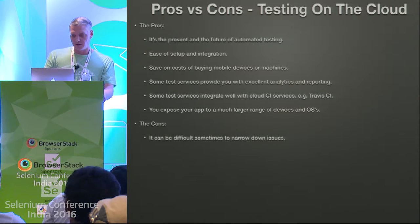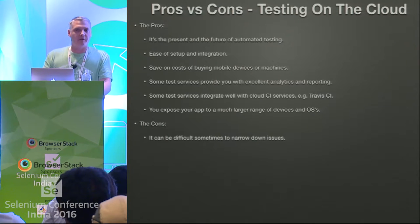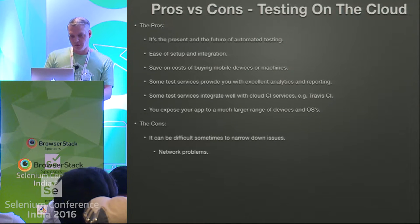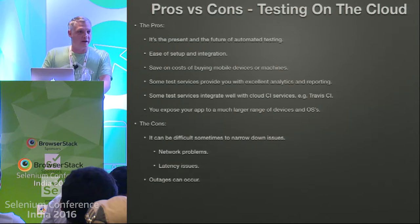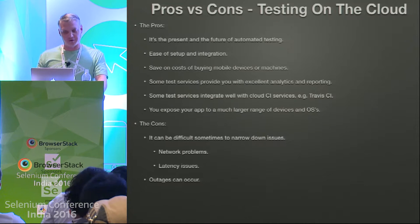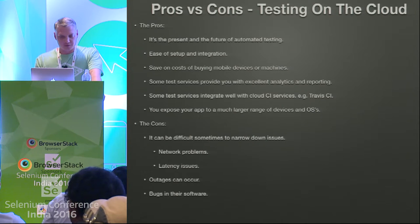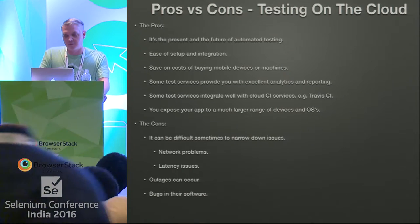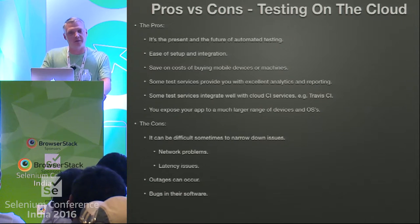The cons: with cloud services, especially remote services, it's sometimes very difficult to determine where the problem lies if you run into an issue. Is it a network problem? Is it a latency issue? Outages can occur just like we've seen here. They could introduce bugs in their software — we're all in the software business and it happens. They may introduce a bug and you can't run your tests, so you're blocked until they fix it.